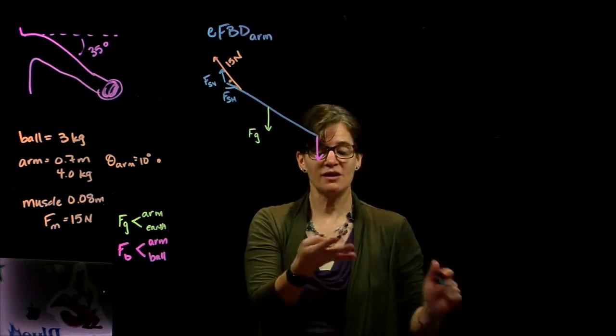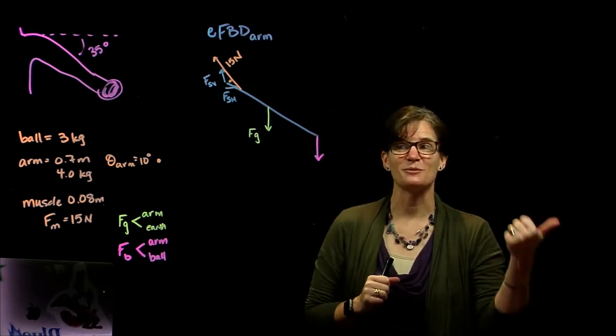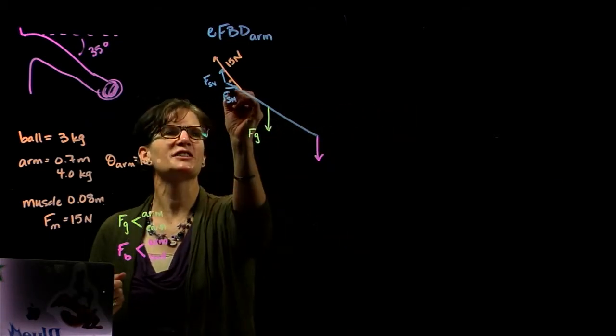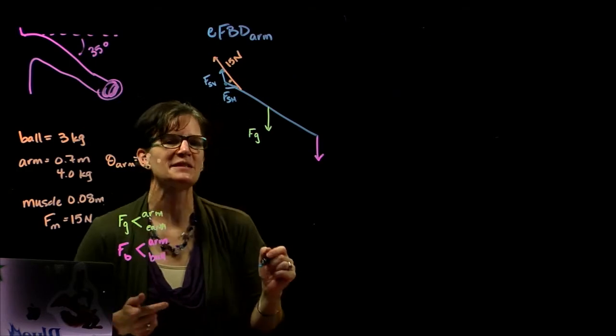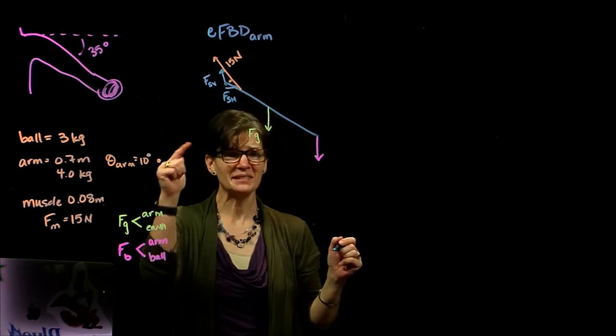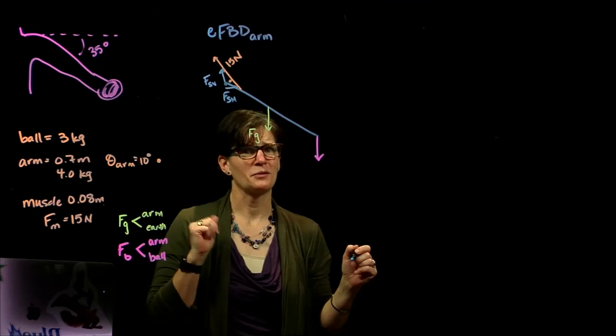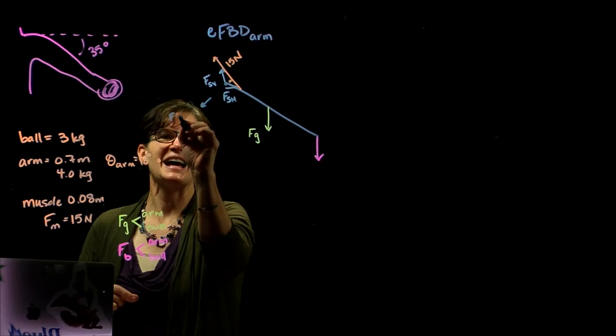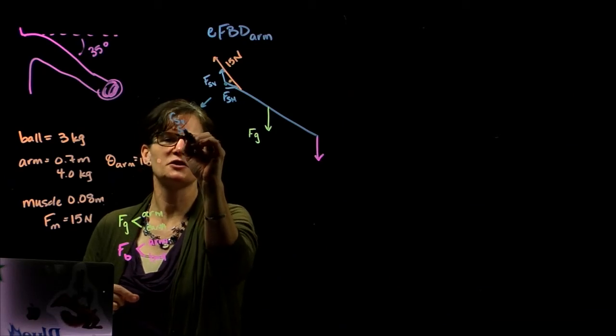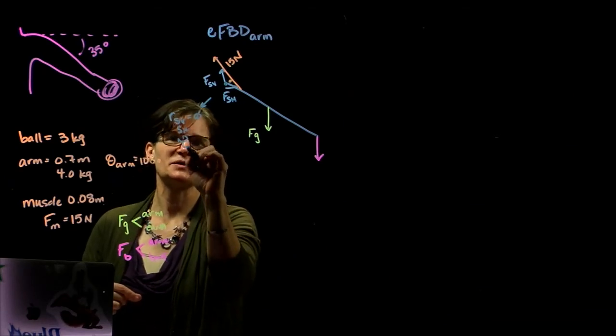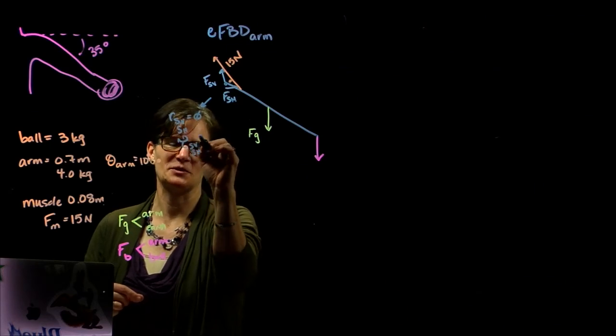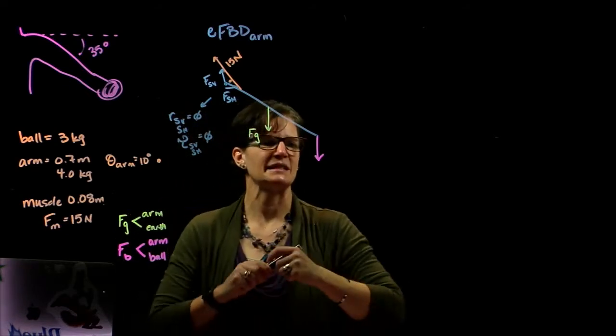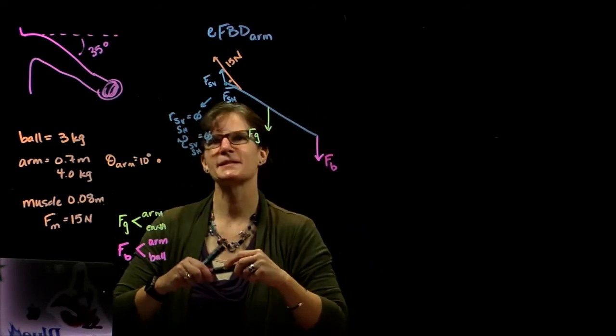Okay, so here are all our forces on the free body diagram. Now we need to identify the radii and the angle at which those forces are acting. So we're going to set the pivot point at the shoulder joint. Why might I do that? Well, I'm interested in the net torque on the object. And I'm given all the other forces except the force of the shoulder joint. So if I set my pivot point at the shoulder joint, then the radii for both the shoulder vertical and the shoulder horizontal is equal to zero. So the torque for the shoulder vertical and the shoulder horizontal is equal to zero. And that's strategically a good idea. I realized I did not label that force.